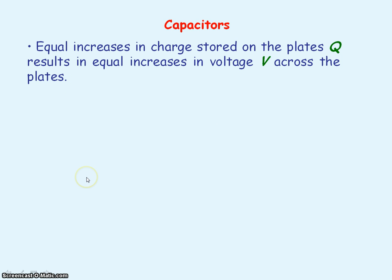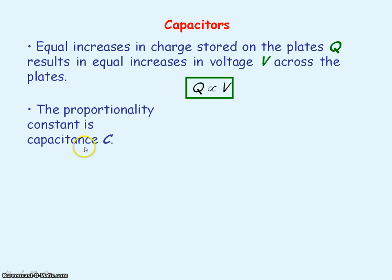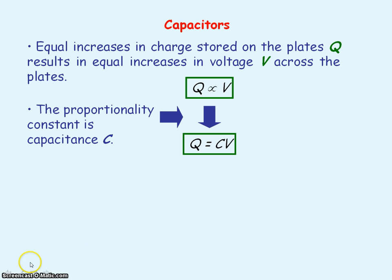Equal increases in the charge stored on the plates result in equal increases in the voltage across the plates. This means that the charge stored on the plates is directly proportional to the voltage across it — Q is proportional to V. To get this into an equation we need a proportionality constant, which is the capacitance C of the capacitor, giving us Q equals CV.